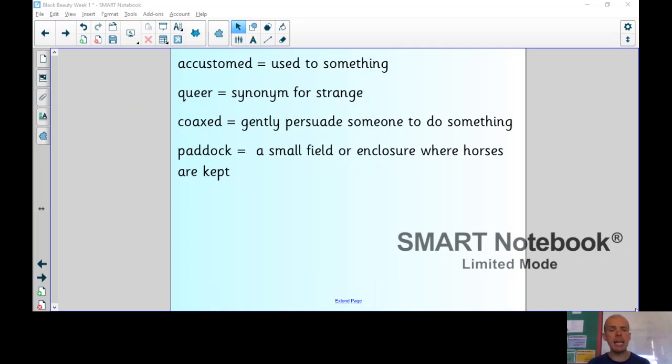Chapter three, my breaking in. I was now beginning to grow. My coat had grown fine and soft and was bright black. I had one white foot and a pretty white star on my forehead. I was thought very handsome. My master would not sell me till I was four years old. He said lads ought not to work like men. And colts ought not to work like horses till they were quite grown up. When I was four years old, Squire Gordon came to look at me. He examined my eyes, my mouth and my legs. He felt them all down. And then I had to walk and trot and gallop before him. He seemed to like me. And when he has been well broken in, he will do very well. My master said he would break me in himself as he should not like me to be frightened or hurt. And he lost no time about it for the next day he began.